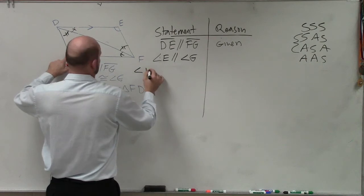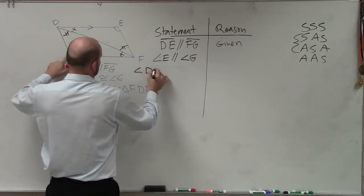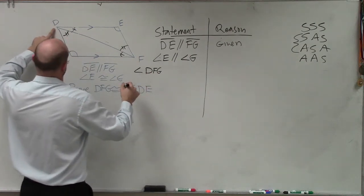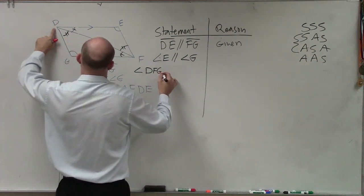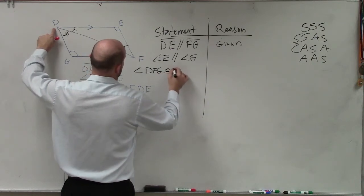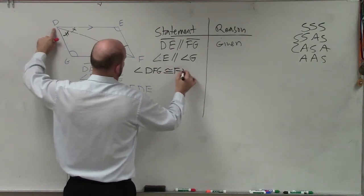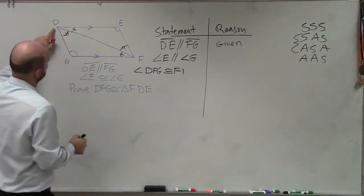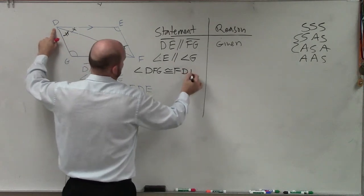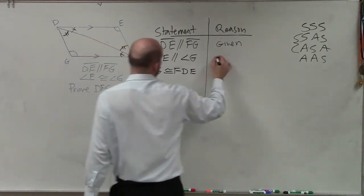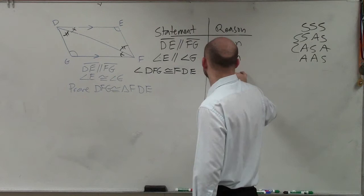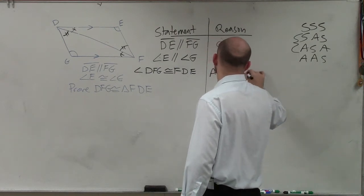Let's do angle DFG. So D to F to G, D to F to G, is congruent to F, D to F, F to D, F to D to E. Why are those equal? Because they're alternate interior.